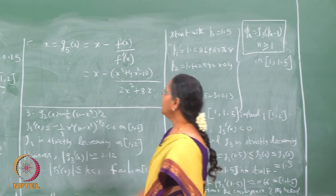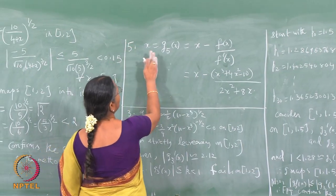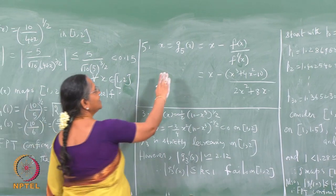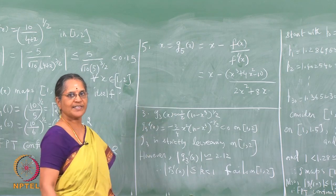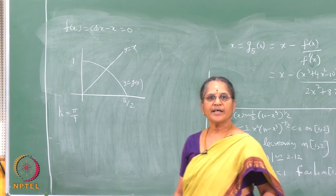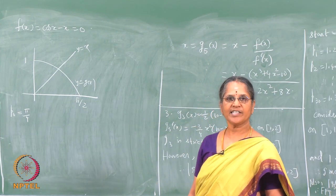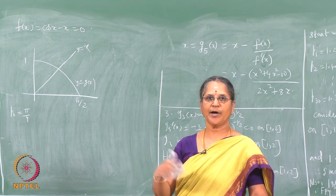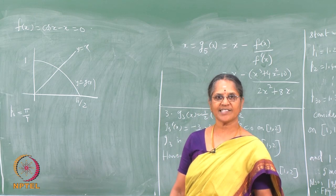Finally, we will show that when we take the fifth form x = gφ(x) = x - f(x)/f'(x), the convergence is very rapid, and we will explain why this happens later. We shall consider an example and apply the fixed point iteration method to understand how it relates to the root finding problem in the next class.